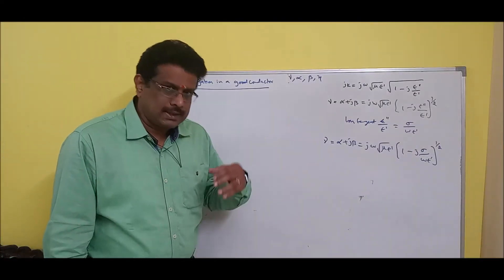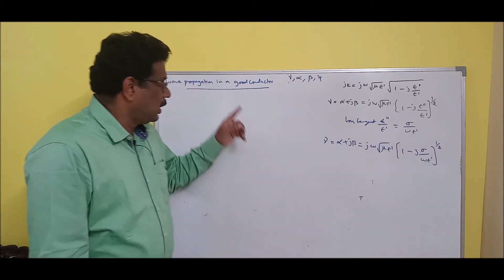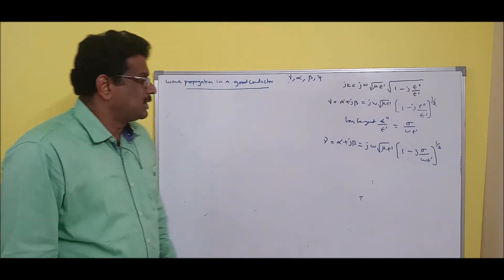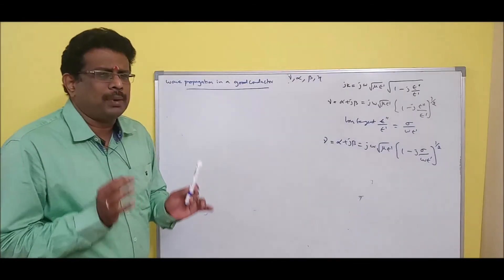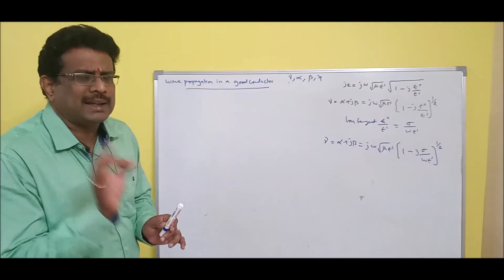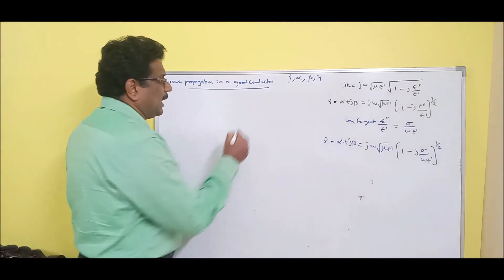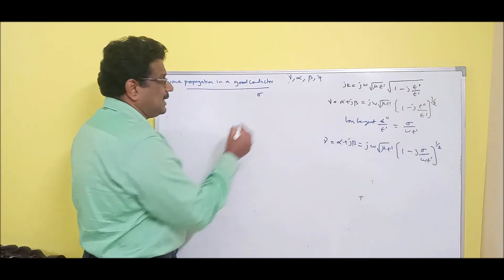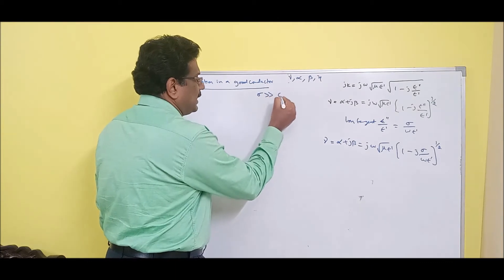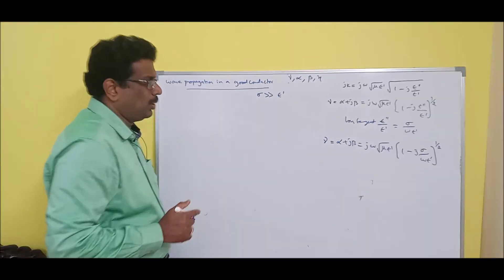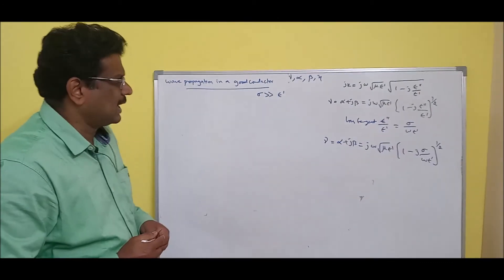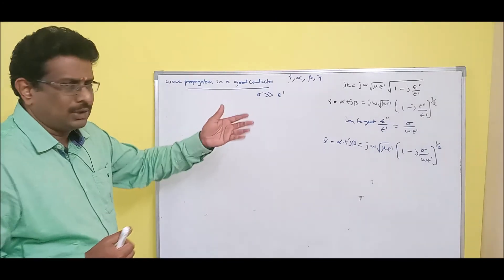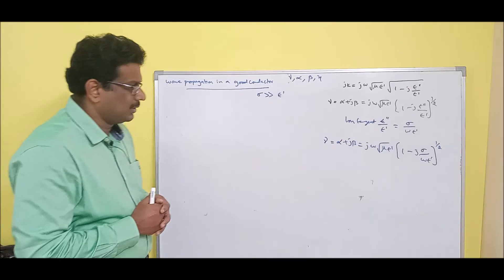Let us see the next medium — a good conductor. The title is: wave propagation in a good conductor. It is a perfect conductor — like metal. If it is a good conductor, its conductivity is much higher than its permittivity. This is a basic physics concept. Previously we discussed the poor conductor; now it is the reverse — a good conductor.